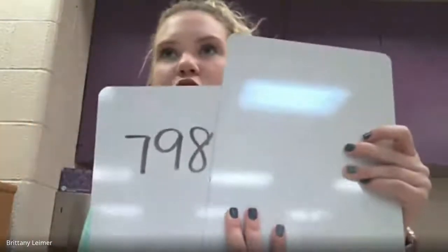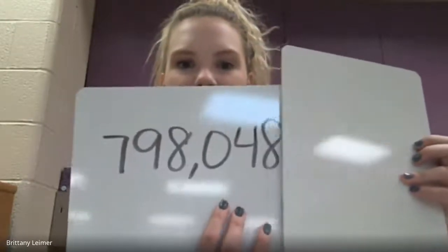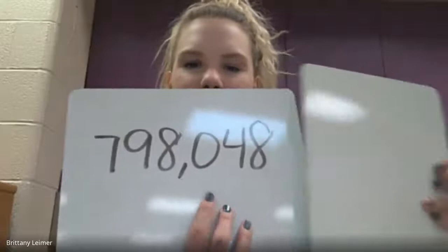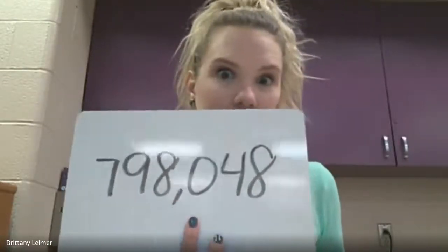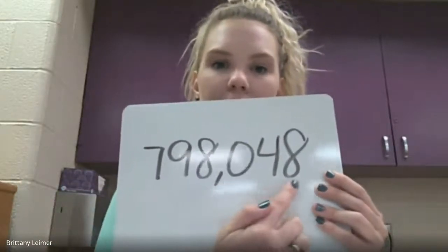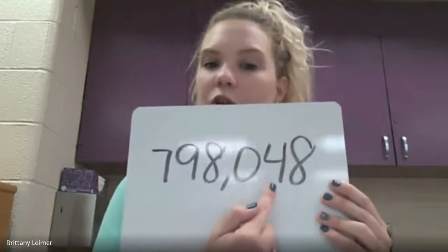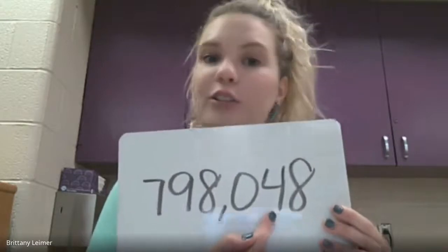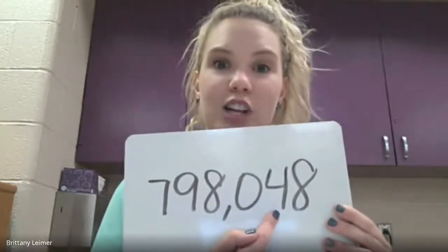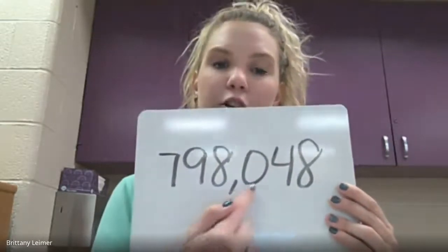Let's do another one — this is going to be a little bit trickier. We read the first number: 798,000. Watch this, it's going to get tricky: 48. Do I have to read that zero? What does zero say? Zero doesn't say anything. So my number is 798,048. Notice I didn't say 'and' because there's no number called 'and.' Seven hundred ninety-eight thousand, forty-eight — 798,048.